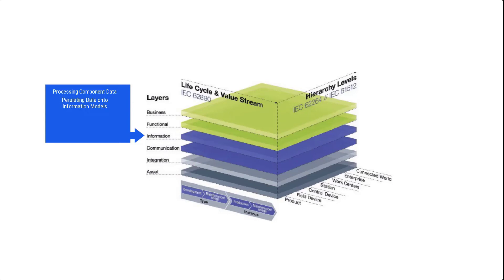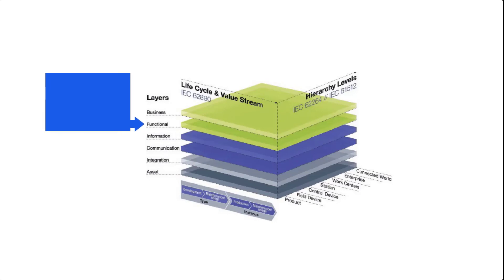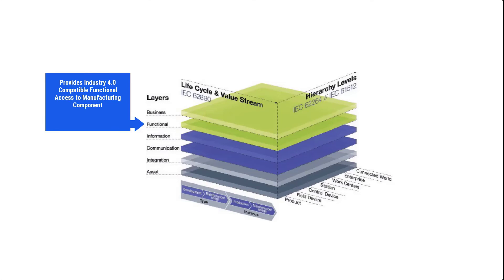The information layer enforces semantic interoperability of a component, thereby making its data representation and access Industry 4.0 compatible. Then there is the functional layer, which includes formal descriptions of the functions or services provided by the component to other components in a smart manufacturing system. In addition, the functional layer incorporates some decision-making logic, executes services that support business processes, and serves as a basis for remote access and the horizontal integration aspect of smart manufacturing. ERP functions in the manufacturing context are typically located in the functional layer.